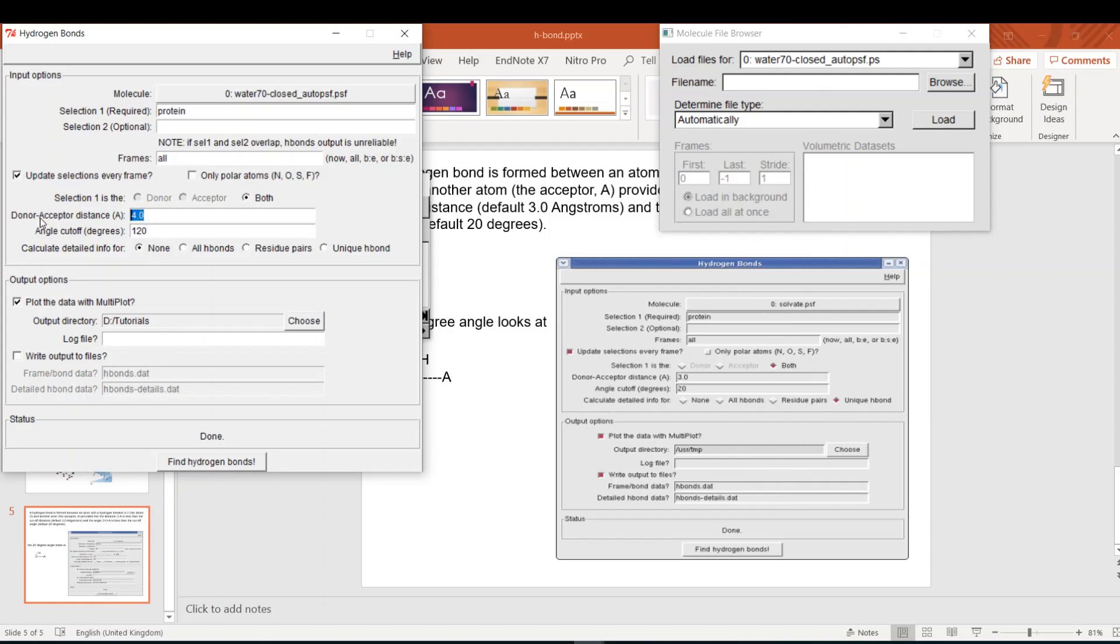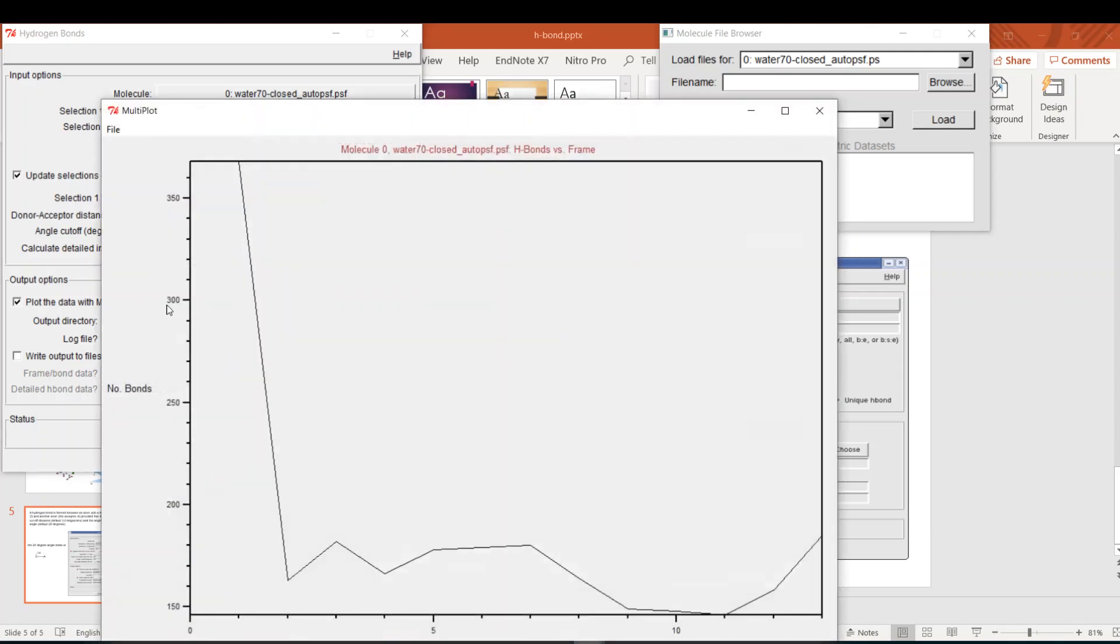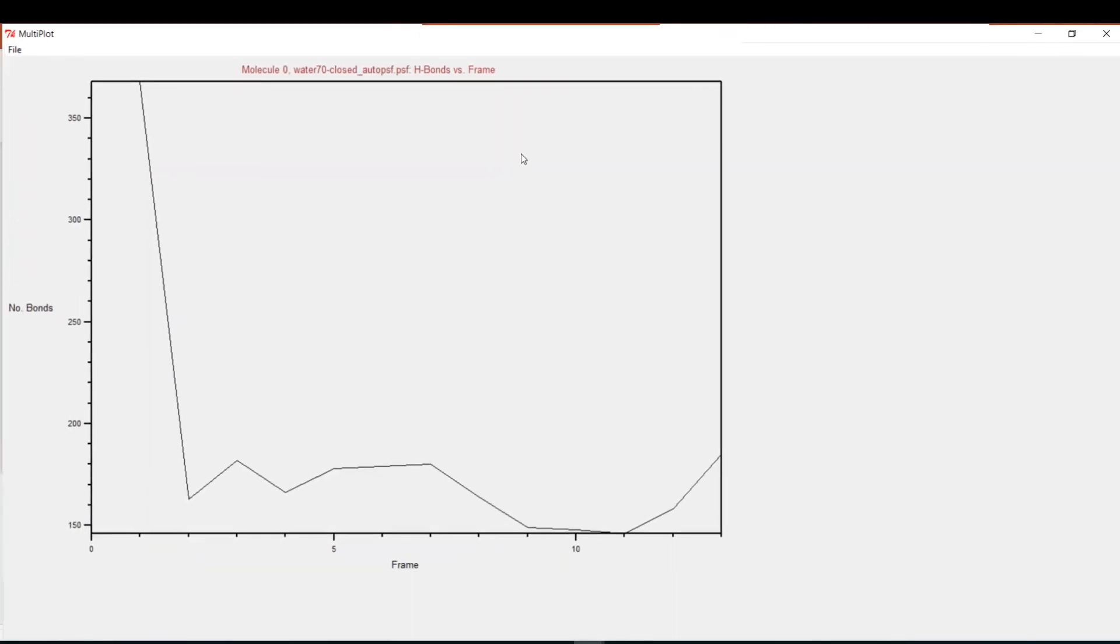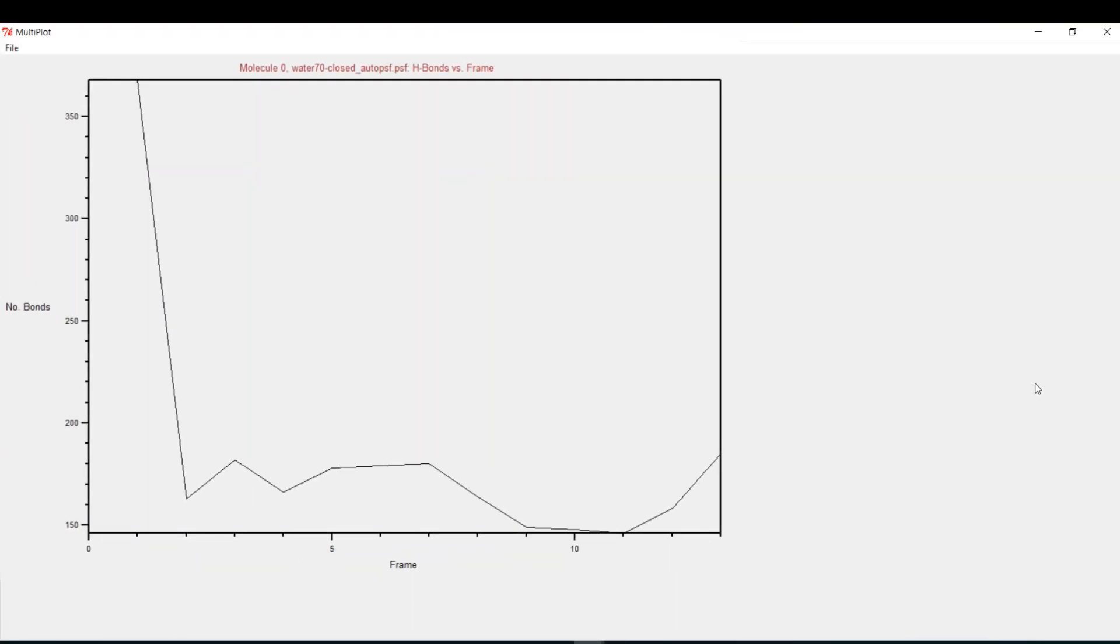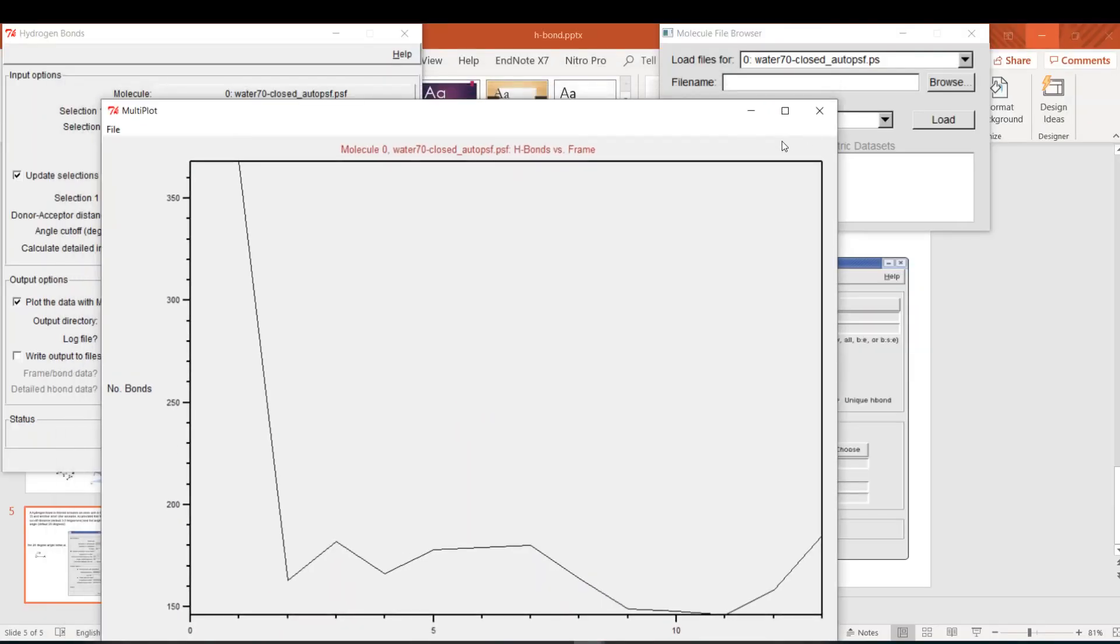So now we got the point. I will get back to the default restrictive threshold of VMD and I will say 3 angstroms and 20 degrees. And I will say protein and solvent. I have a solvent which might be water or whatever. Let's find the hydrogen bonds. Yeah, 350 and goes down by the end of the trajectory. Here are the frames and the number of hydrogen bonds.